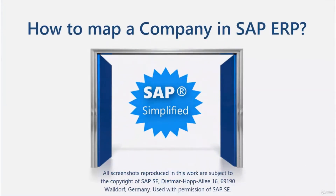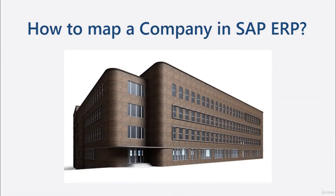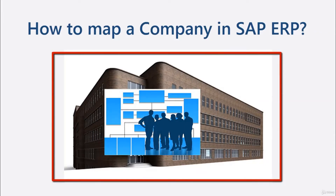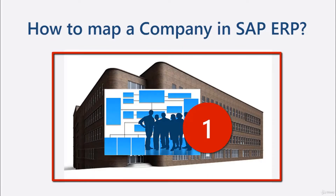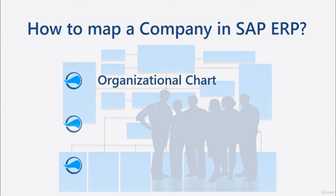How to map a company in SAP ERP. Each company is somehow organized. An organizational structure shows the internal hierarchy, and this corporate framework must be set in the system first. This video explains how a real company structure is transferred into a digital one — that's why the equivalent of a company's organizational chart in SAP ERP will be discussed.